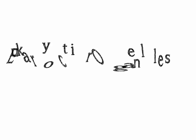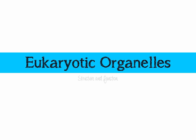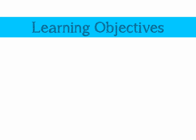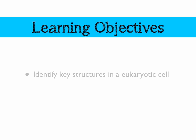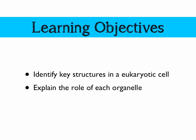We're going to look at the organelles of eukaryotic cells — their structure, what they look like, and their function, what they do. Let's have a look at our learning objectives, a nice and quick one this week. We're going to identify key structures within a eukaryotic cell and explain the role of each organelle.